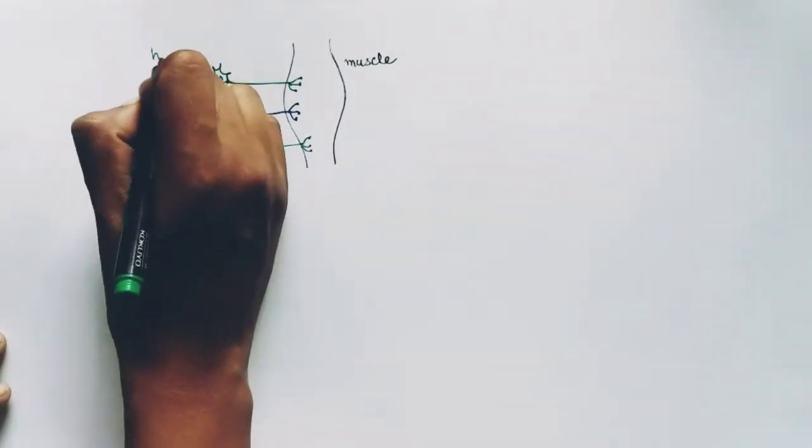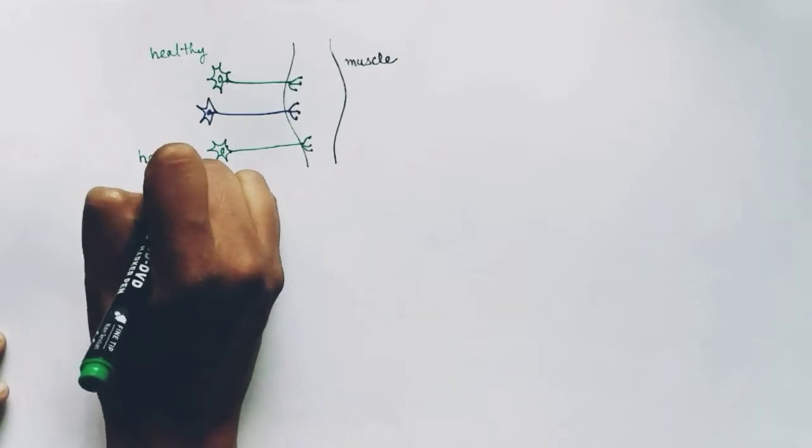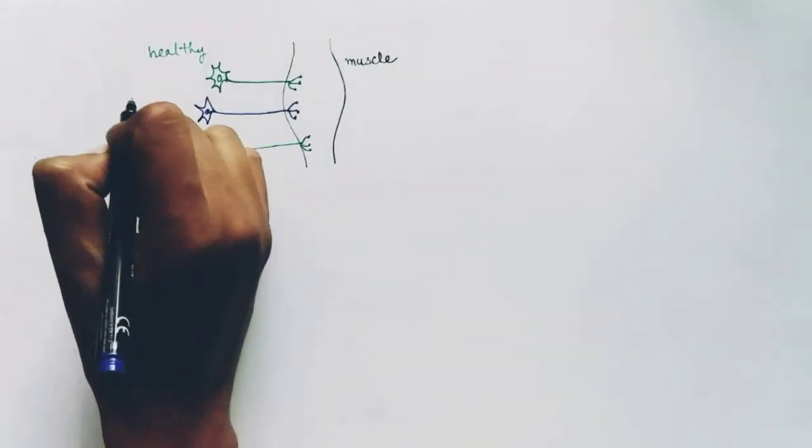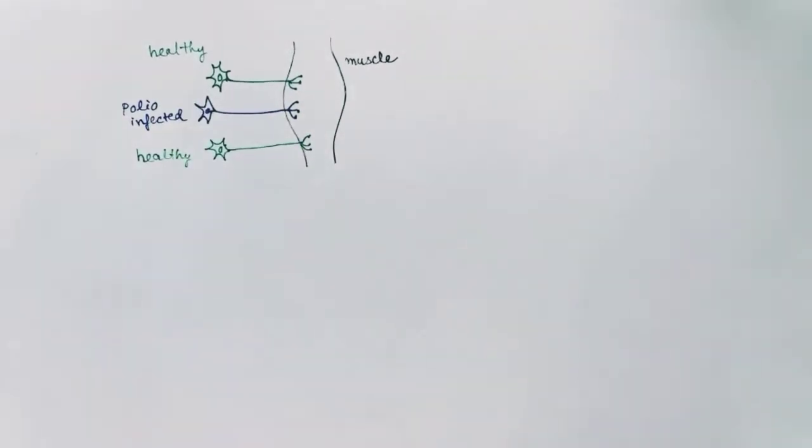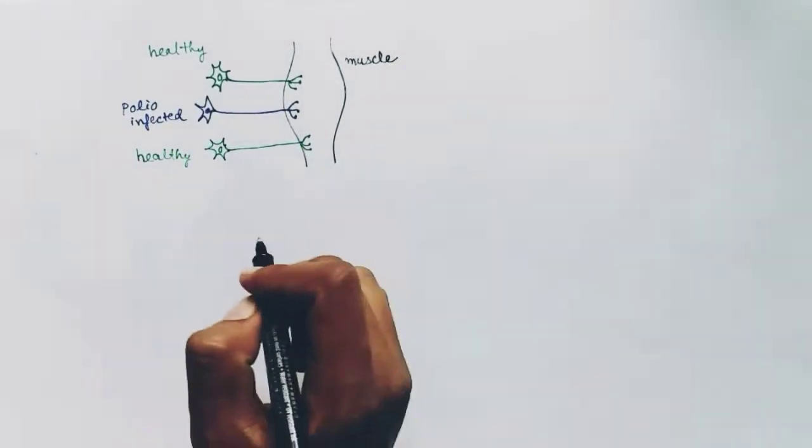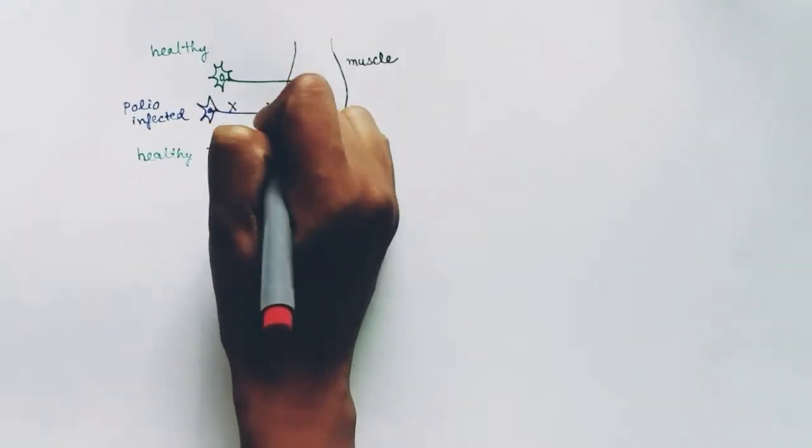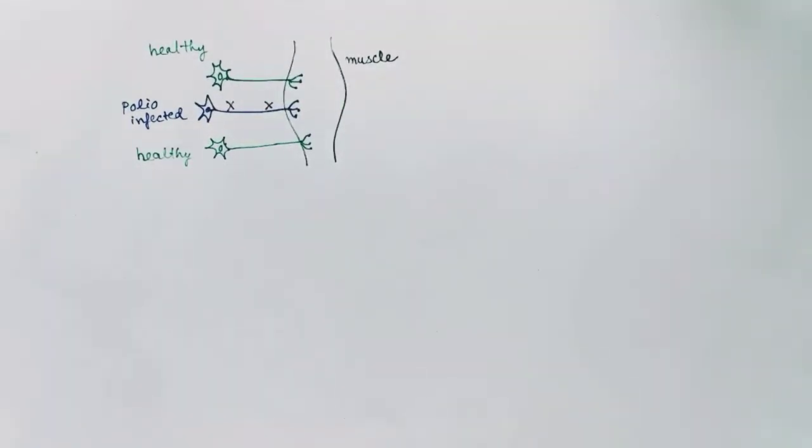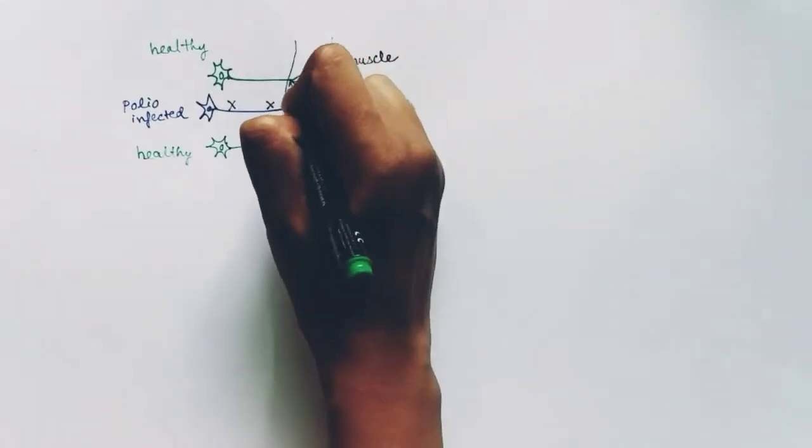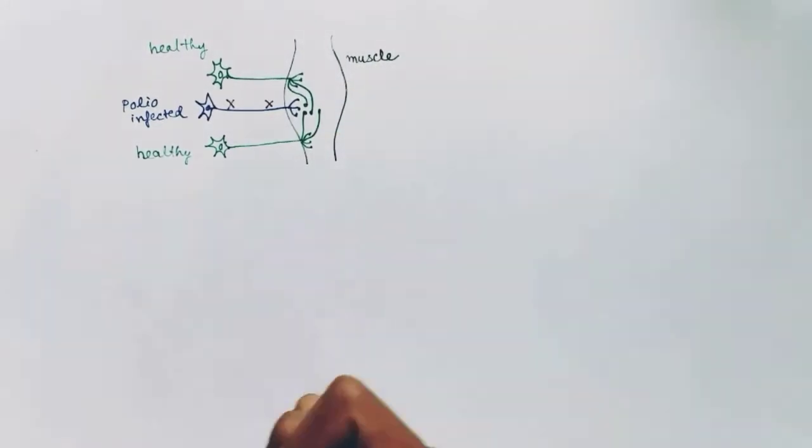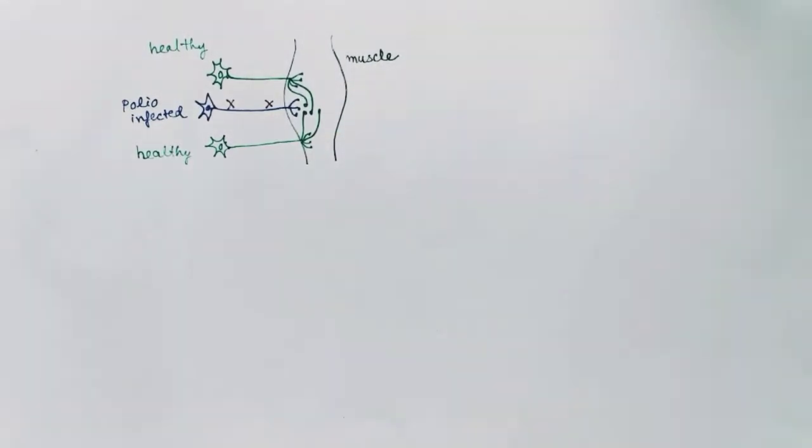They can carry signals from the spinal cord to the muscle. The blue one is the polio-infected one, so the muscle connected to this neuron will be paralyzed. But when polio damages some motor neurons, other nearby healthy motor neurons form collateral branches that innervate the muscle that has lost innervation.